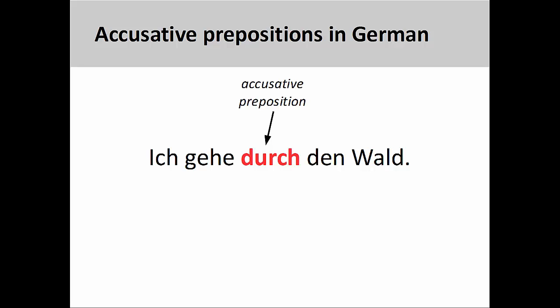German also has prepositions, which are classified as being either accusative, dative, or two-way — either accusative or dative. The preposition you see on the screen, 'durch,' is an accusative preposition meaning 'through.'